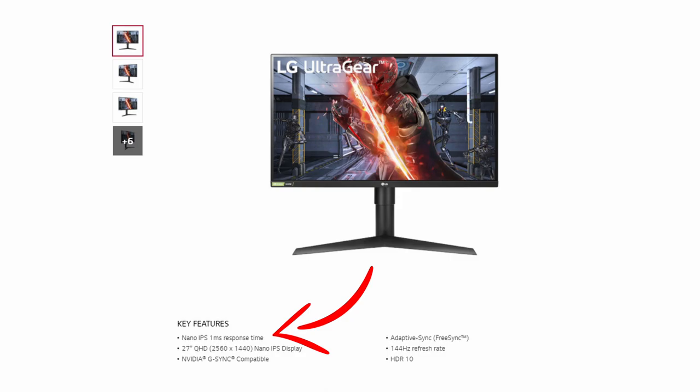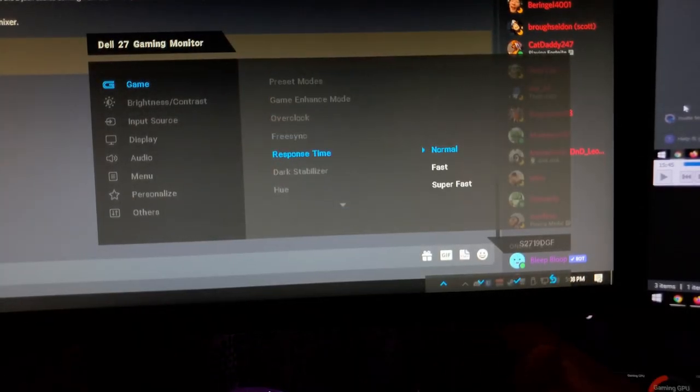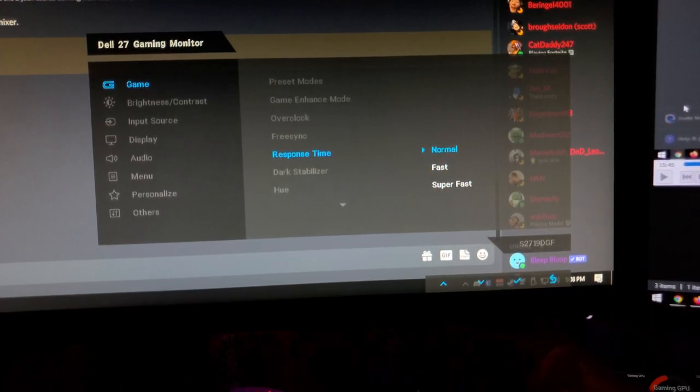Finally, look at the response time settings in your monitor's on-screen menu. A lot of newer monitors advertise super fast or sub-one-millisecond response times by basically overdriving the pixels. If you go into settings you'll usually have options like normal, fast, super fast, or ultra. The higher you set those, the more ghosting will usually appear, because the pixels can't change fast enough to match the latency the monitor is trying to achieve. I'd suggest starting at normal or the lowest setting, and if you notice a latency issue, turn it up a little and see if you notice ghosting — try to find a good balance.